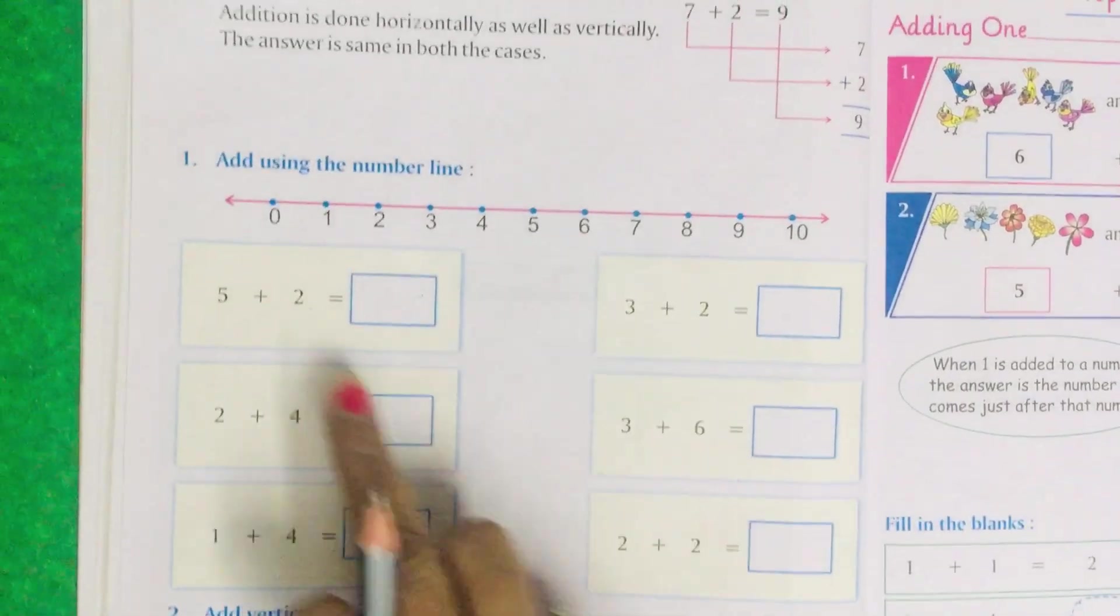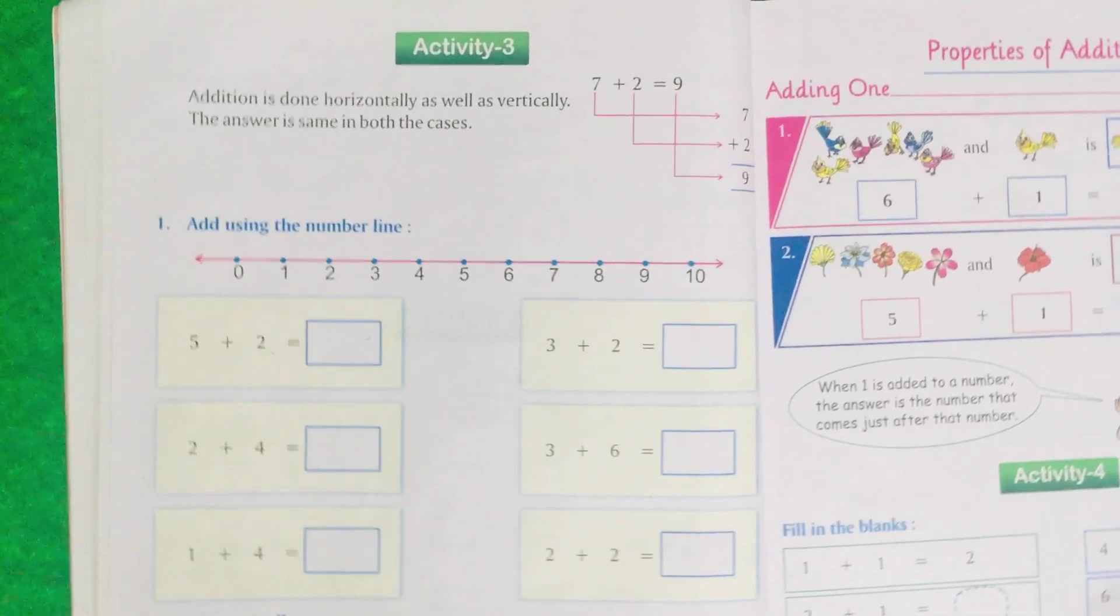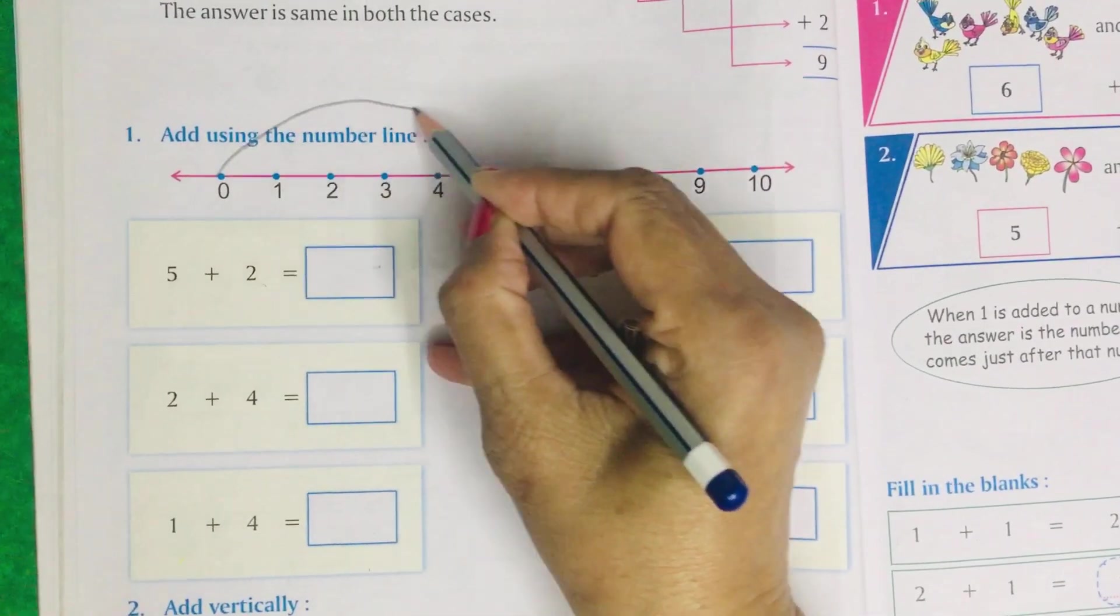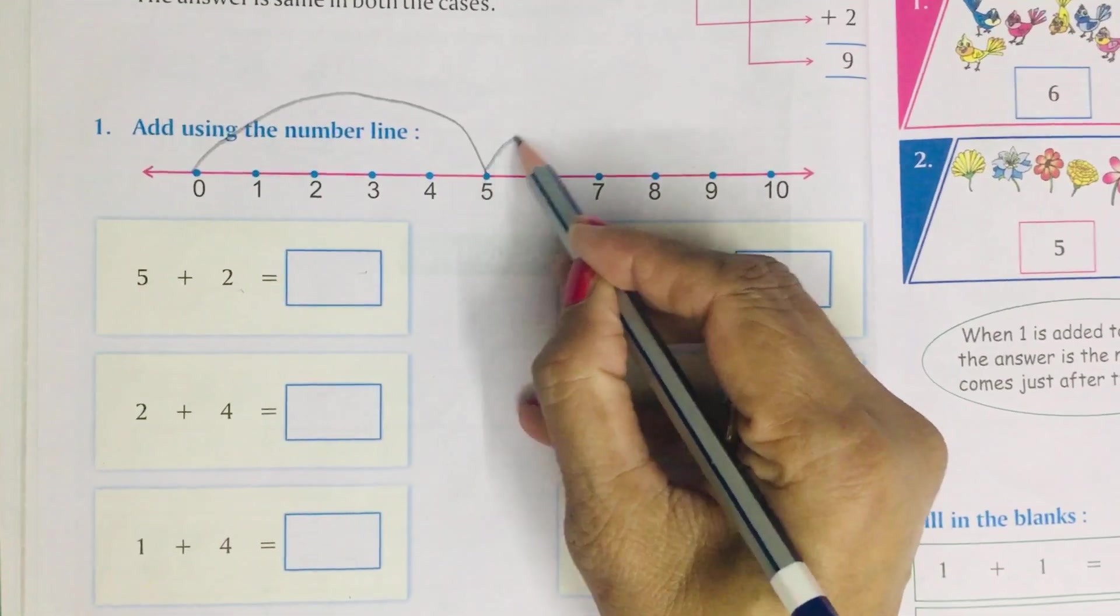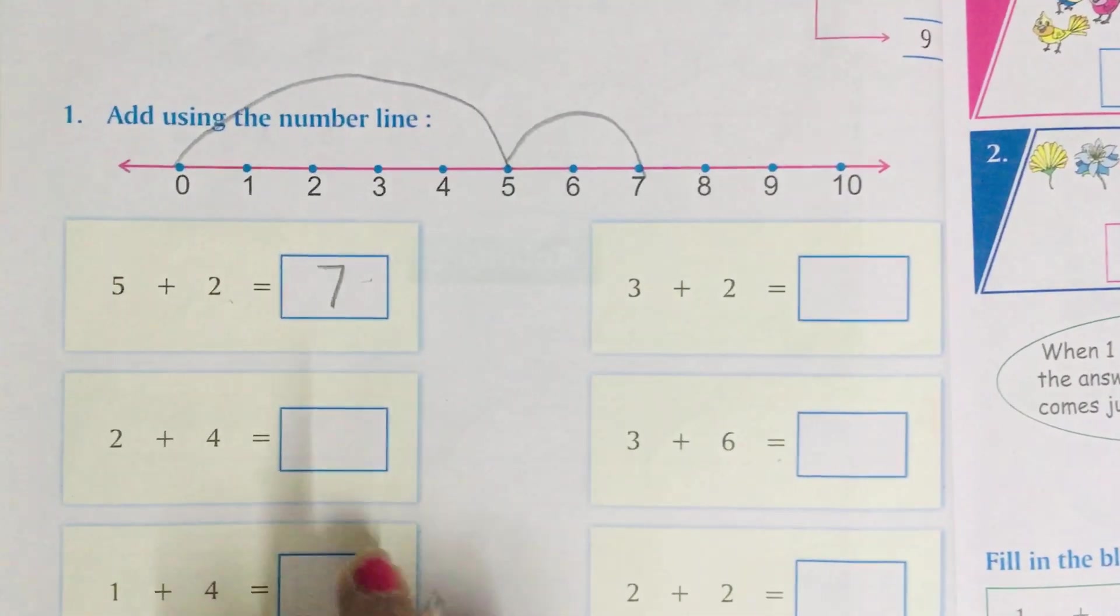Turn your page. You have to do these sums by using number line like this only. 5 plus 2. See, 5 plus 2. You will get answer 7. You have to do these sums like this.